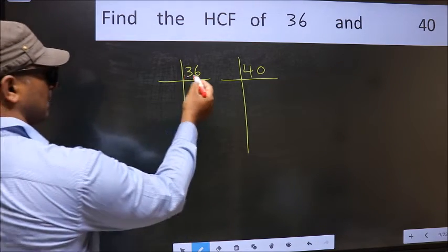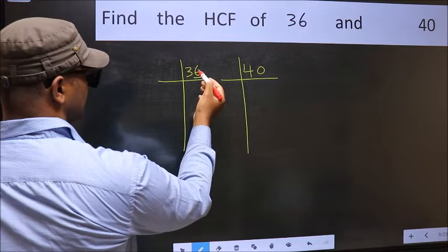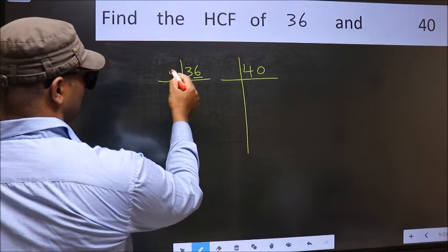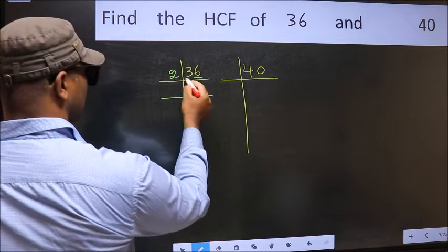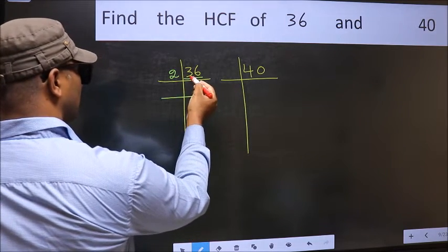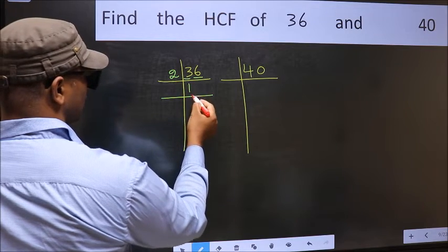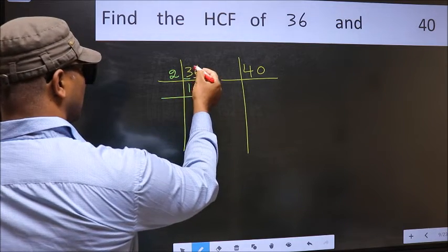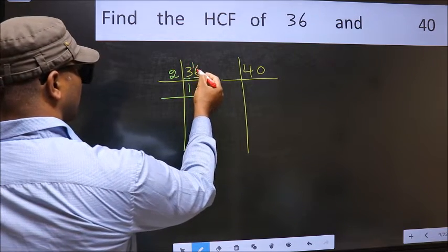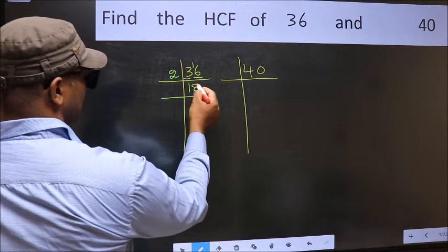For 36, the last digit is 6, so take 2. The first number is 3; a number close to 3 in the 2 times table is 2. So 3 minus 2 is 1, carry forward 16. When do we get 16 in the 2 times table? 2 times 8 is 16.